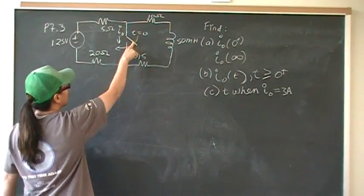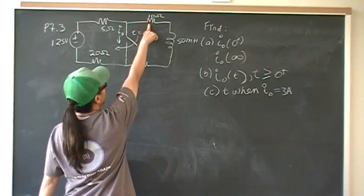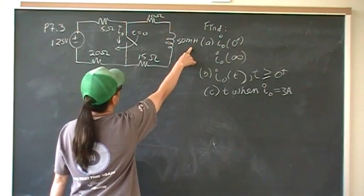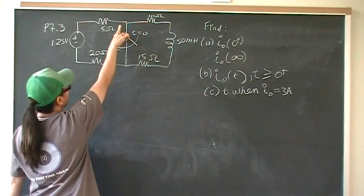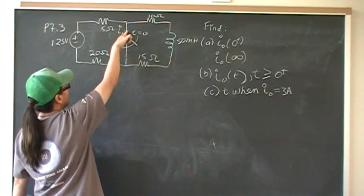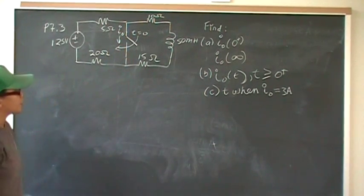There's an open switch that will close at time zero. There's a 10 ohm resistor here, 15 ohms here, 50 millihenry inductor. And we want to get information about the current here after the switch closes.